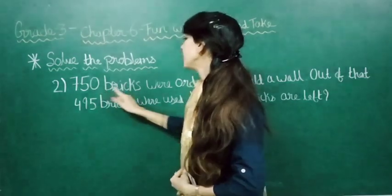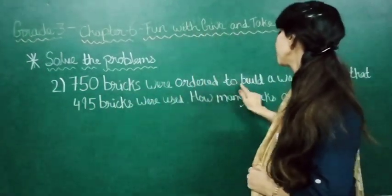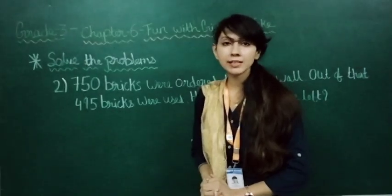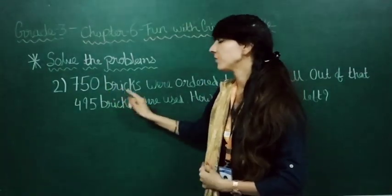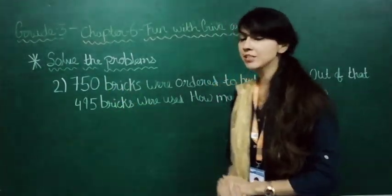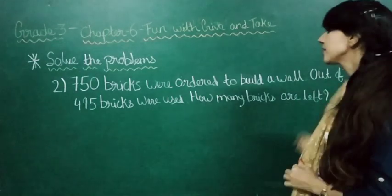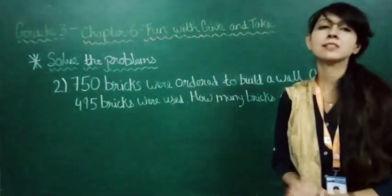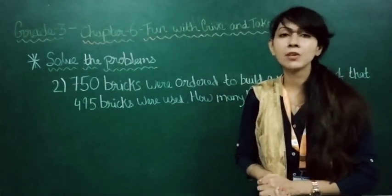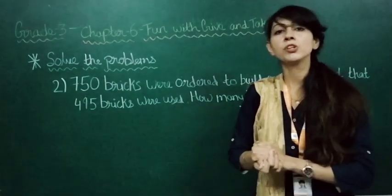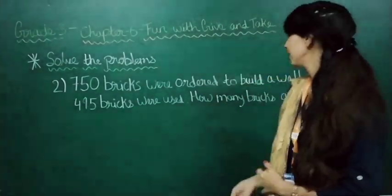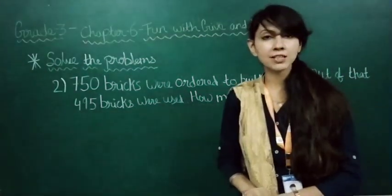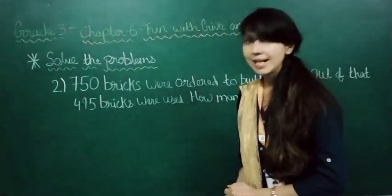750 bricks were ordered to build a wall. Out of that, 495 bricks were used. How many bricks are left? Now let's find out.